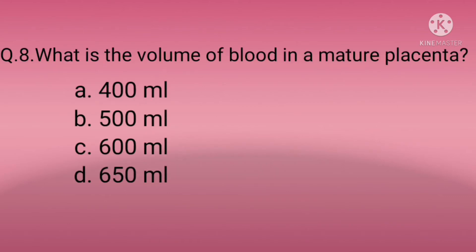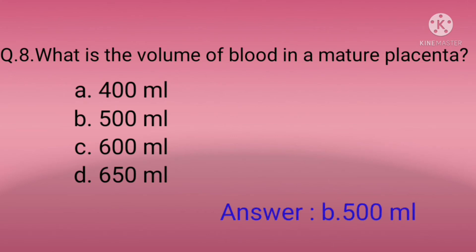Question eight: What is the volume of blood in a mature placenta? Option A: 400 ml, Option B: 500 ml, Option C: 600 ml, Option D: 650 ml. The correct option is B — 500 ml.